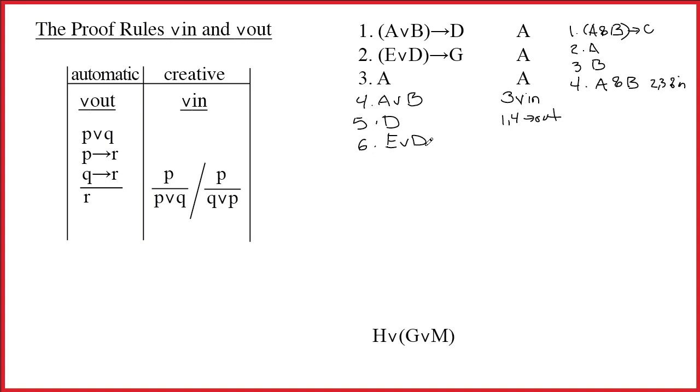Where did this E wedge D come from? Did it come from line 2? No. 2 is merely the inspiration. And then I see the D on line 5, and I say, ah, great, I can pull an E out of thin air and stick it in front of my D. 5 wedge in is the justification. Well, I know why I did that. It's so I could do the arrow out, and on 7, I can get G. And that would be 2, 6, arrow out.